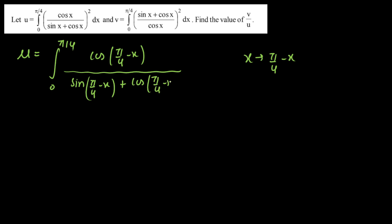Now let's open the numerator. So we'll get u as integration 0 to π/4. Cos A cos B, that is 1/√2 cos x, plus sin A sin B.